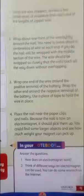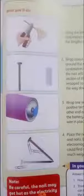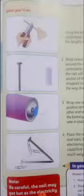Place the nail near the paper clips. Because the nail is now an electromagnet, it should pick them up. You could find some larger objects and see how much weight your magnet can pick up. When the current flow stops, it will be made of an ordinary nail. We can also know that the magnet is very strong.